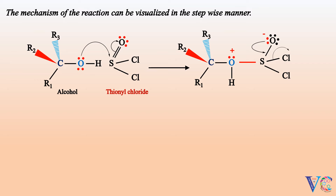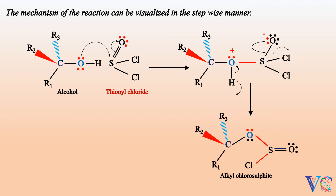Simultaneously, there will be elimination of H+ ion, with the polarization of the bonded pair of electrons of the OH bond onto the electron deficient oxygen. As a consequence, alkyl chlorosulfite is formed. Now, there takes place internal attack by the chlorine onto the carbon, leading to the formation of alkyl chloride with the retention of configuration, and simultaneous elimination of sulfur dioxide.